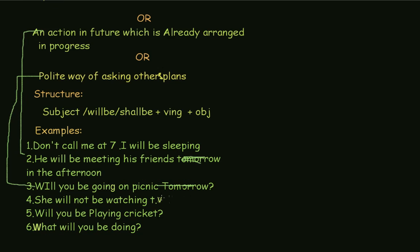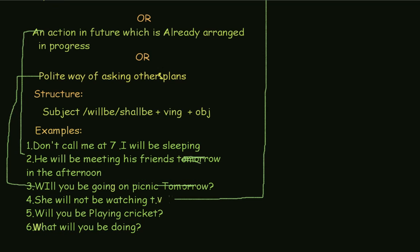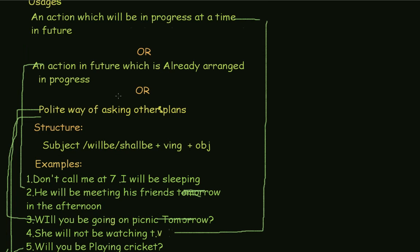'She will not be watching TV' — this is an action which will be in progress at a time in the future. 'Will you be playing cricket?' — this is also a polite way of asking others' plans. 'What will you be doing?' — also a polite way of asking others' plans.